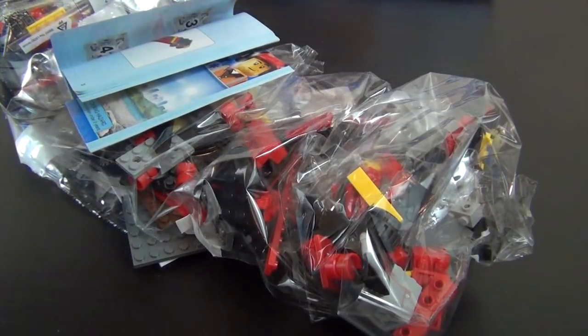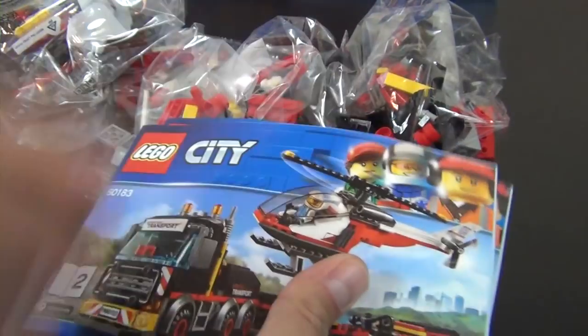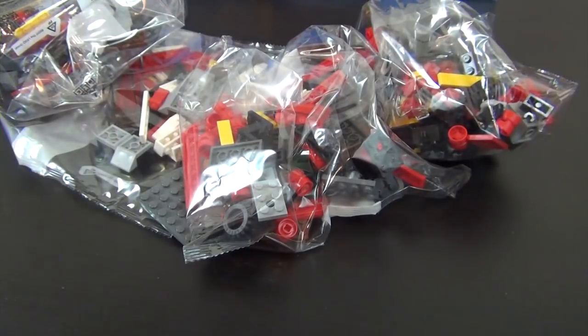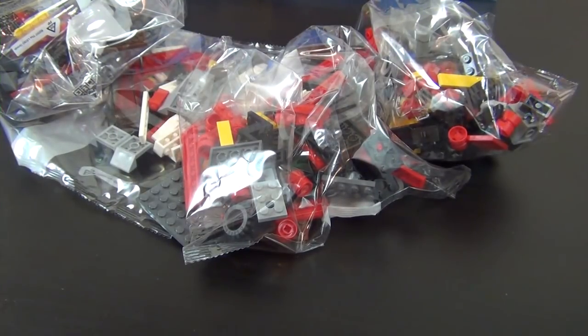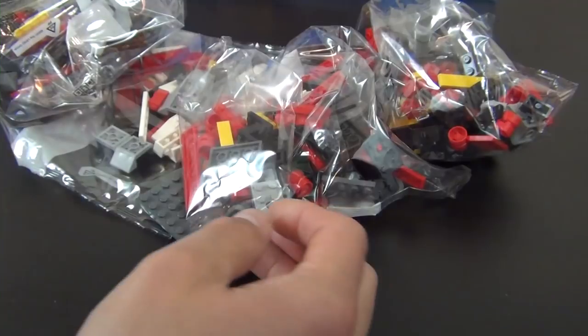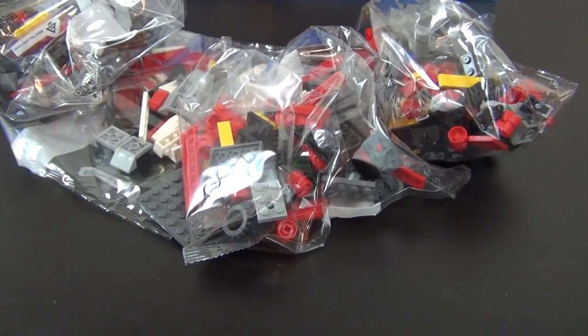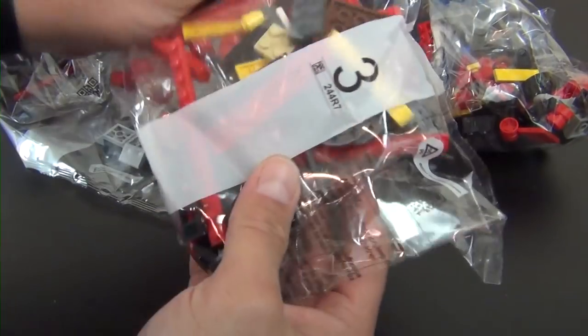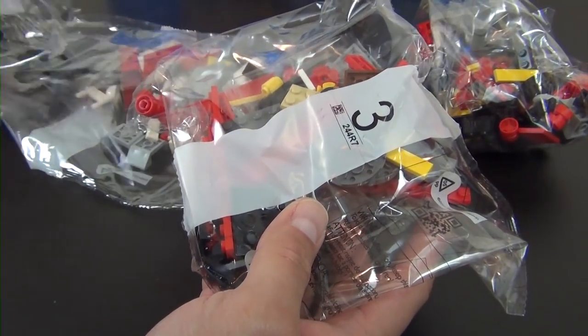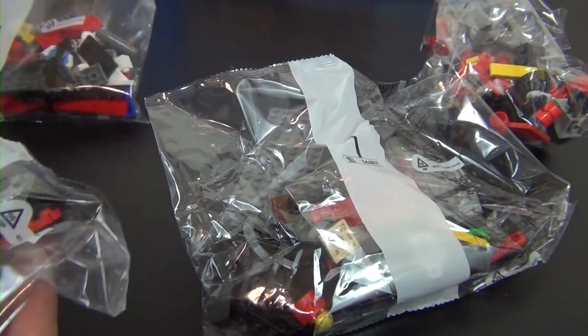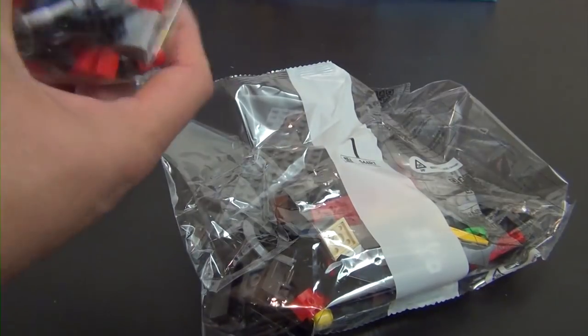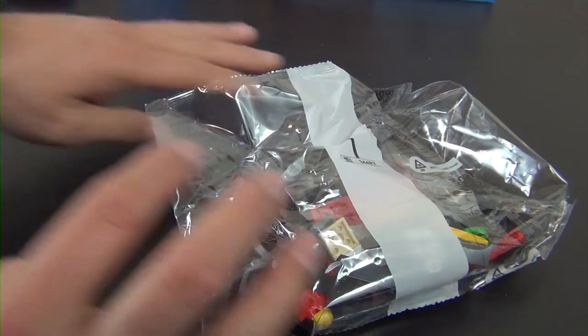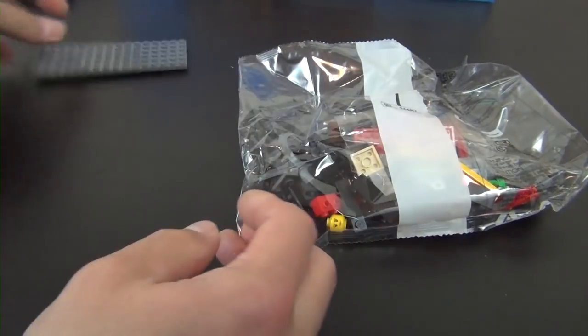Alright, so there's our contents. It looks like we have two instruction books, we have a medium sized sticker sheet, I was going to say small but it's kind of more on the medium side. And we have numbered bags, let's see, there's bag 1, we have a 4, a 3, a 2. And then we also have this loose plate.